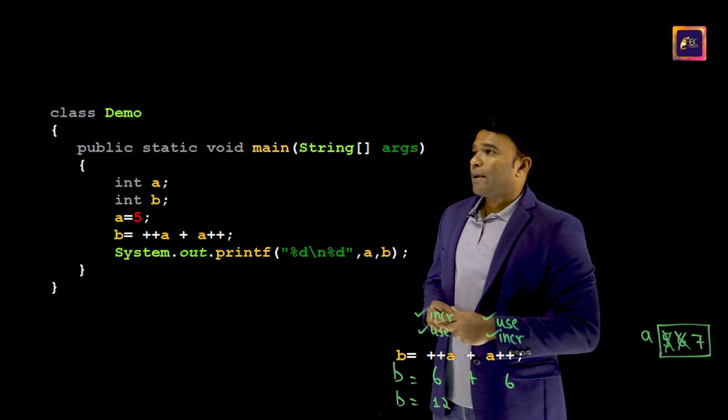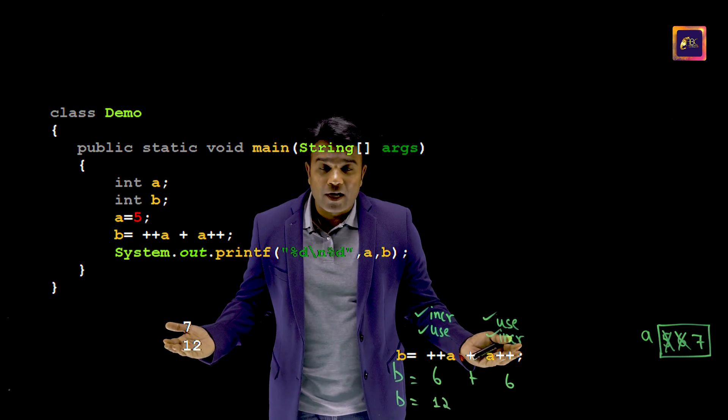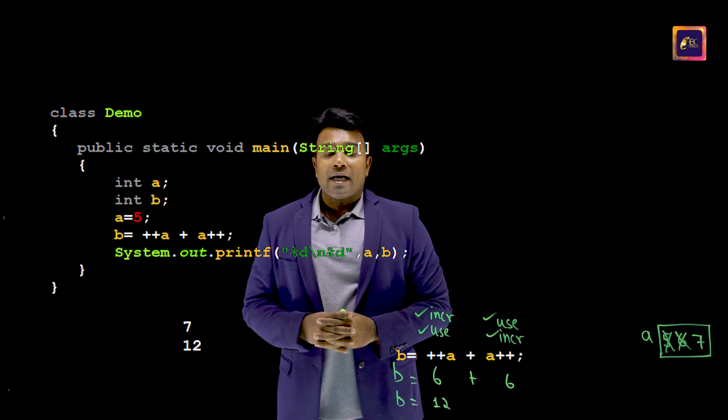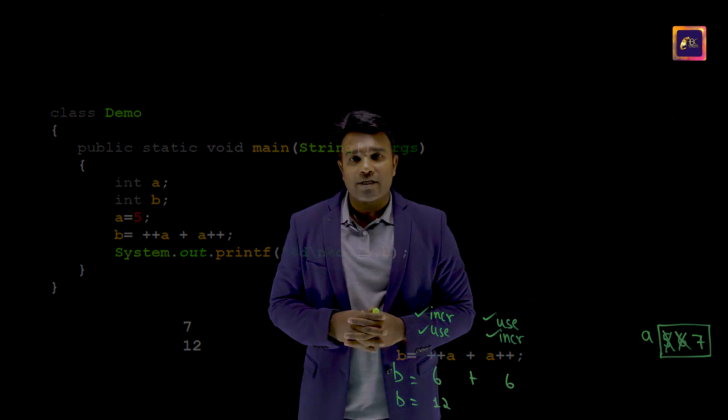Let's check. I will call my program back and when I execute, this is the output. Hope all of you have been able to understand how an expression containing pre and post-incrementation has to be evaluated. Now that you have understood the technique, I would wish you to solve the given expression and send across your answer in the comment section. If you want me to deep dive further, watch my next video.